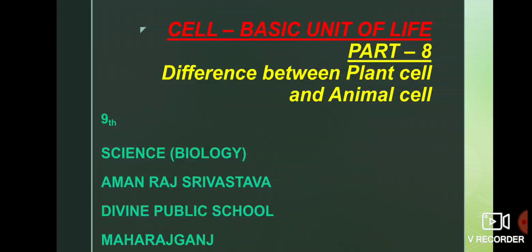There are two types of cell: prokaryotic cell and eukaryotic cell. 'Pro' means primitive, 'karyon' means nucleus — meaning cells whose nucleus is primitive and not well developed are prokaryotic cells. For example, bacteria and blue-green algae. 'Eu' means true, 'karyon' means nucleus — meaning cells whose nucleus is well developed are eukaryotic cells.